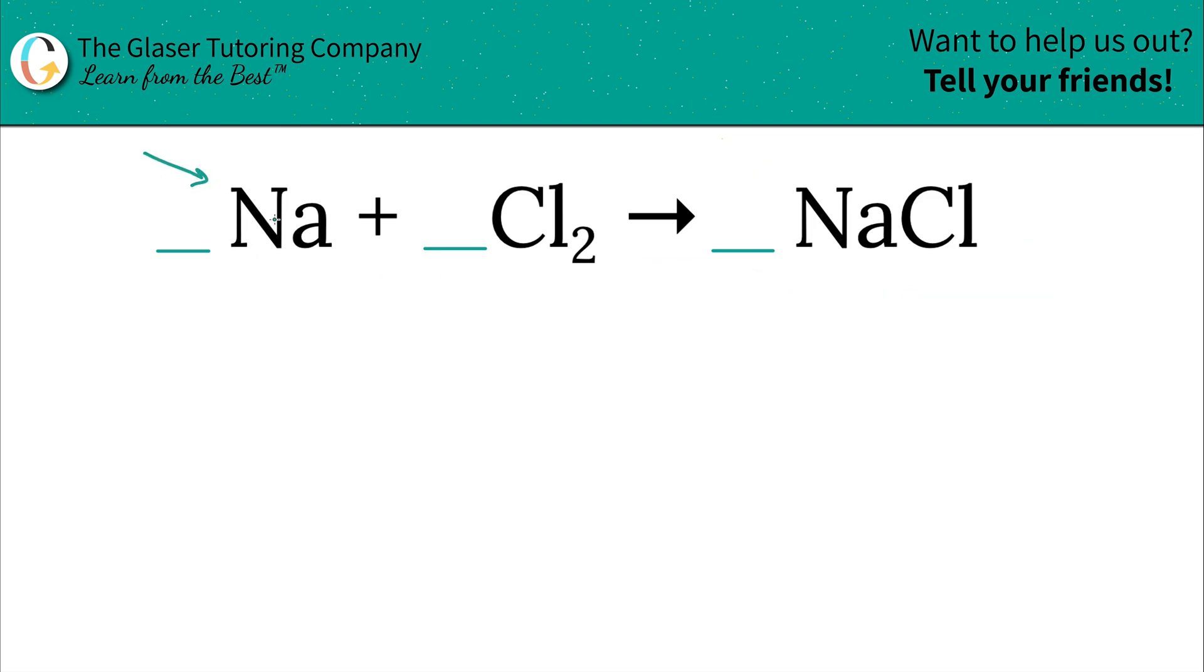Next is to then just work with the first element that you see, and you want to make sure, so sodium, that it's only in one place on the left hand side, which it is, and only in one place on the right hand side, which it is. So I want to balance it. Take a look at now the subscripts. You have one sodium on the left and you also have one sodium on the right. So that's already balanced. Just move on.